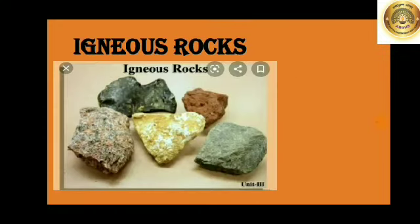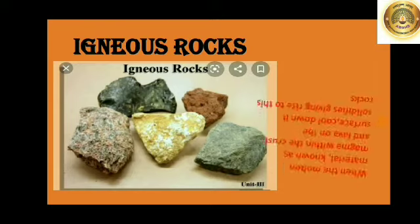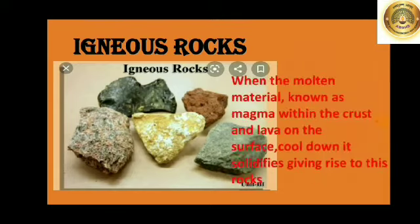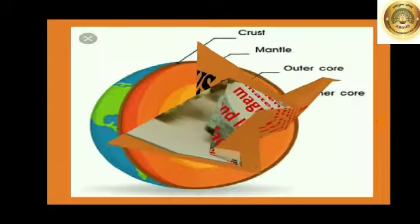Here you can see the picture — igneous rock. Children, when the molten material known as magma within the crust, and lava on the surface, cools down, it solidifies giving rise to rocks. Do you know what is magma and lava? Let me explain that first.